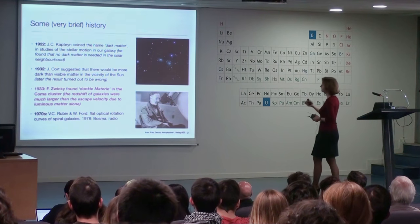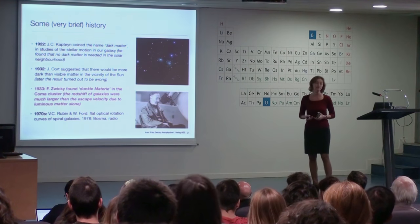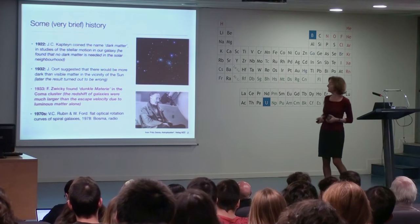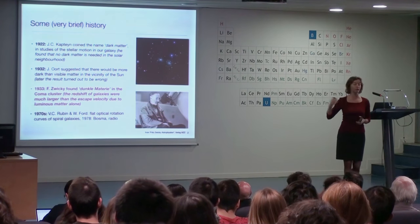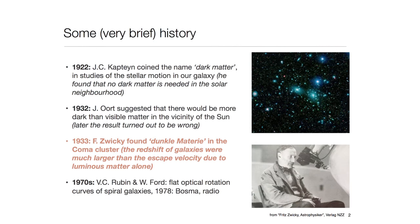Fast forward to 1933: Fritz Zwicky found this dark matter — Dunkle Materie. He was a Swiss astronomer working at Caltech, studying the redshift of galaxies in the Coma Cluster. Those redshifts were much larger than the escape velocities that would be expected from the luminous matter alone.